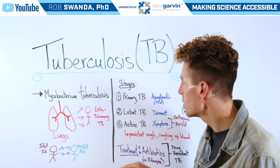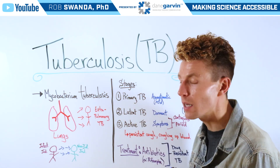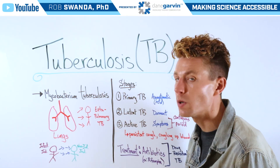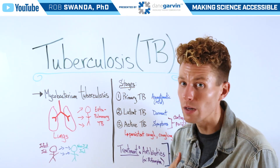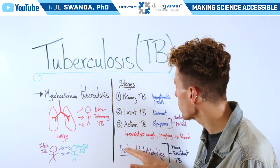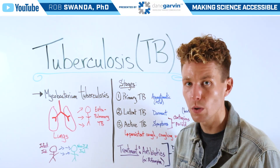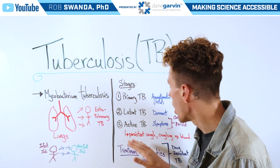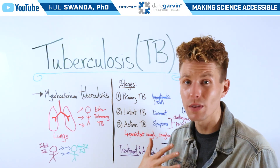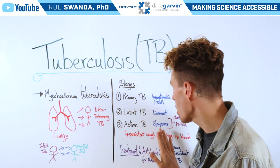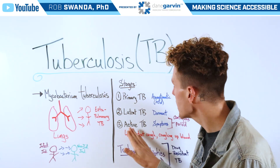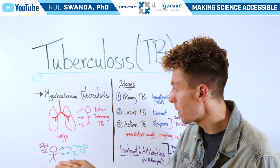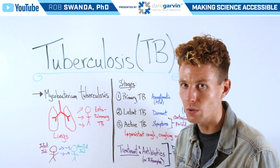It has three stages: the first being primary TB, which is asymptomatic; the second is latent TB, where the bacteria is dormant in one's lungs; and the third is active TB, when symptoms begin to occur. Some of the main symptoms associated with TB are a persistent cough lasting more than two weeks, as well as coughing up blood. It's in this third active TB stage where somebody is contagious and can begin passing it on to non-infected individuals.